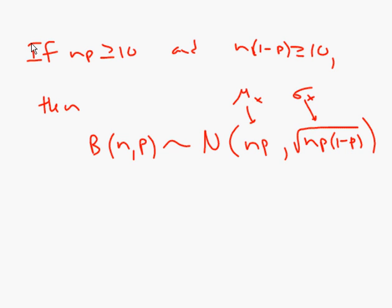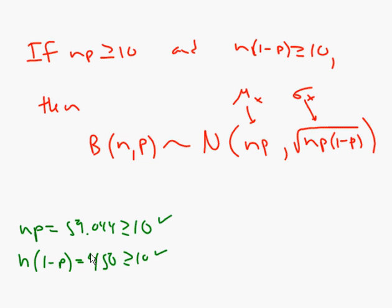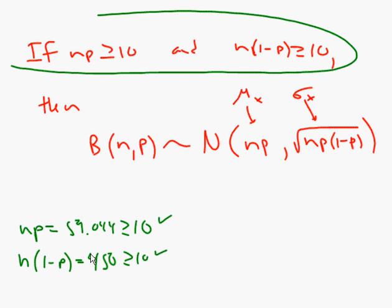Well, in our case, n times p was 59.044. That's certainly greater than or equal to 10. And then n times 1 minus p would be the rest, so that's going to be about 449, 450, which is certainly greater than 10. So our rule, this thing is often referred to as our rule of thumb, is satisfied. So that means that we can go ahead and use this approximation. So let's show how you would do that.